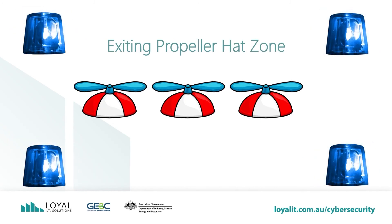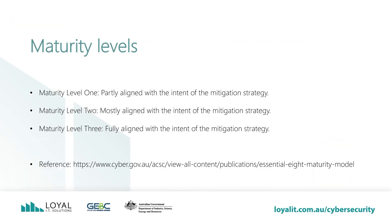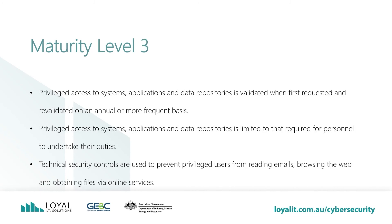We're now exiting the propeller hat zone. We now know the ideas behind restricting administrative privileged accounts. In the premium membership there will be individual videos on each of the Essential Eight, which will dive into each of the maturity levels. For the moment, all we need to know is that there are three levels in each of the Essential Eight items. Maturity Level 3 requires that privileged access to systems, applications and data repositories is validated when first requested and revalidated on an annual or more frequent basis — in other words, audit the accounts and groups periodically. Privileged access is limited to that required for personnel to undertake their duties, referring to enforcing role-based delegation of privileges. This is more effective in larger networks with internal IT staff. SMEs typically have an outsourced IT company manage their network, so a super admin account is more efficient when calling on IT support, but it is less secure.